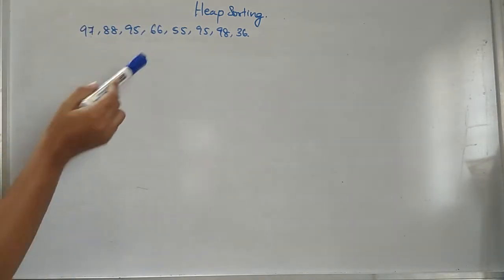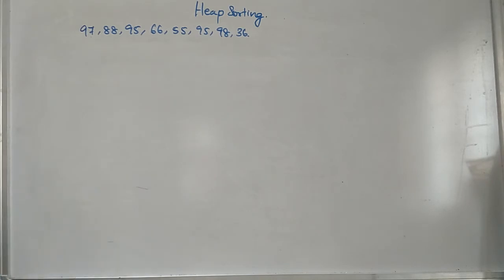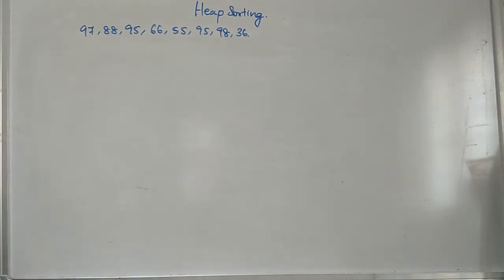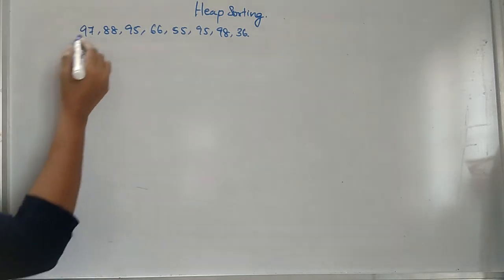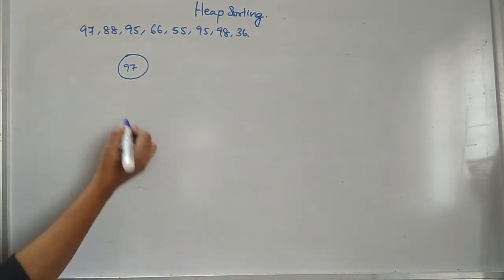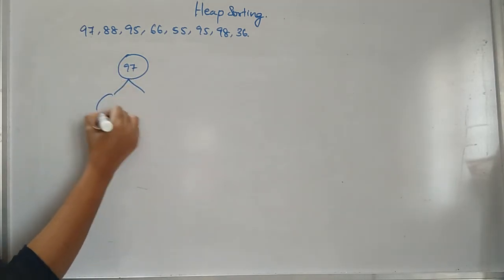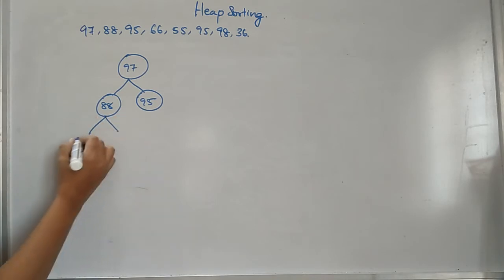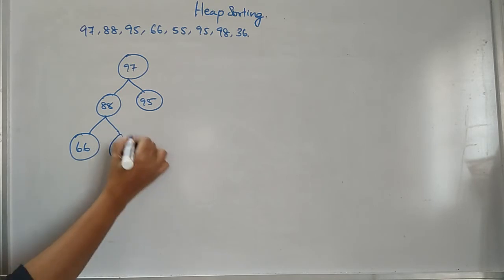It is given in terms of sequential representation. First we have to convert it into the heap. How can we draw it here? First node you can write here is 97, and then the next two possibilities are 88 and 95. And then you can write 66, then you can write 55.